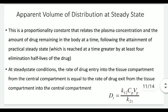Next is the apparent volume of distribution at steady state. This is a proportionality constant that relates the plasma concentration to the amount of drug remaining in the body following the attainment of practical steady state, reached at a time greater than at least 4 elimination half-lives of the drug. At steady state, the amount of drug moving from the central compartment to the tissue compartment equals the amount moving back, and a mathematical equation is given to calculate this apparent VD at steady state.